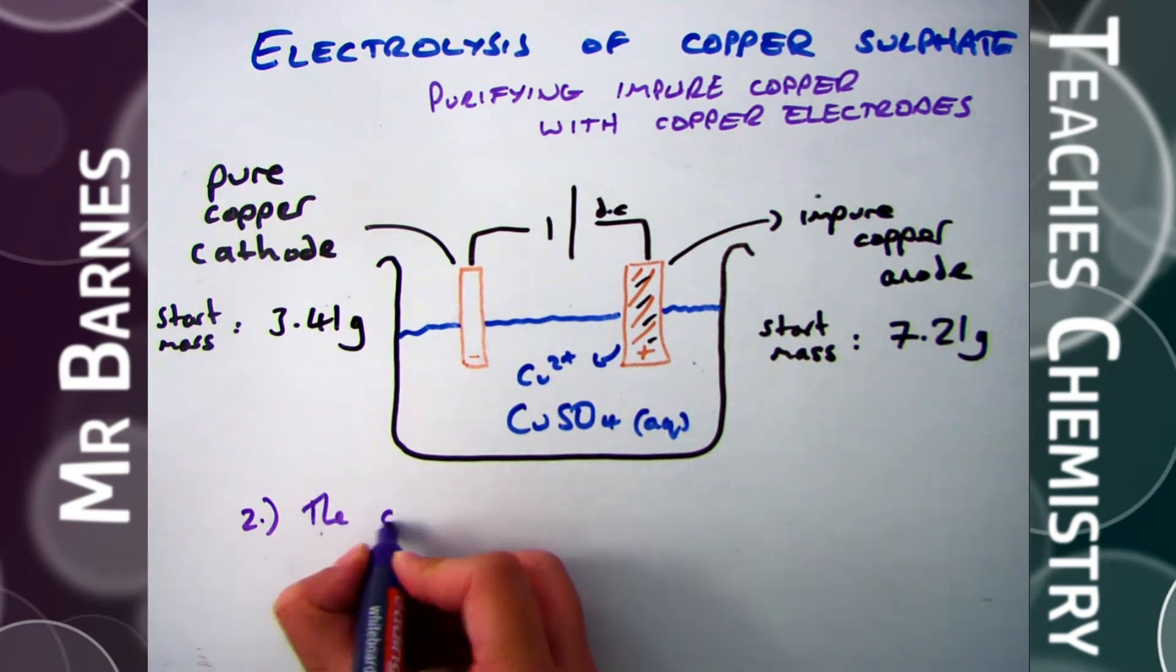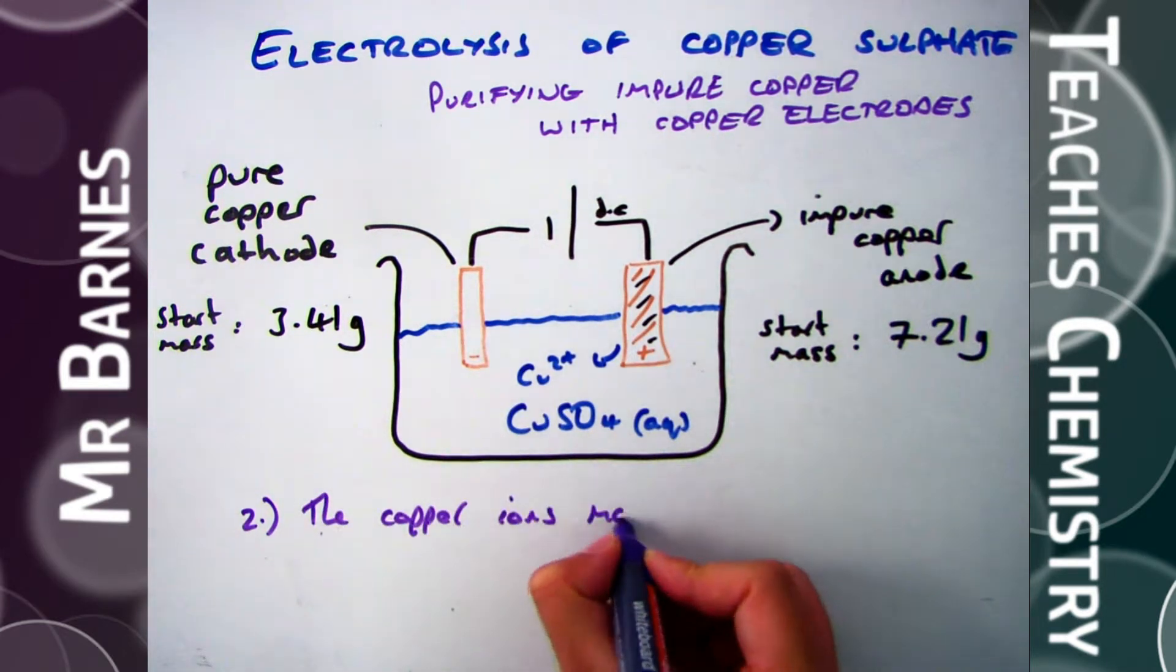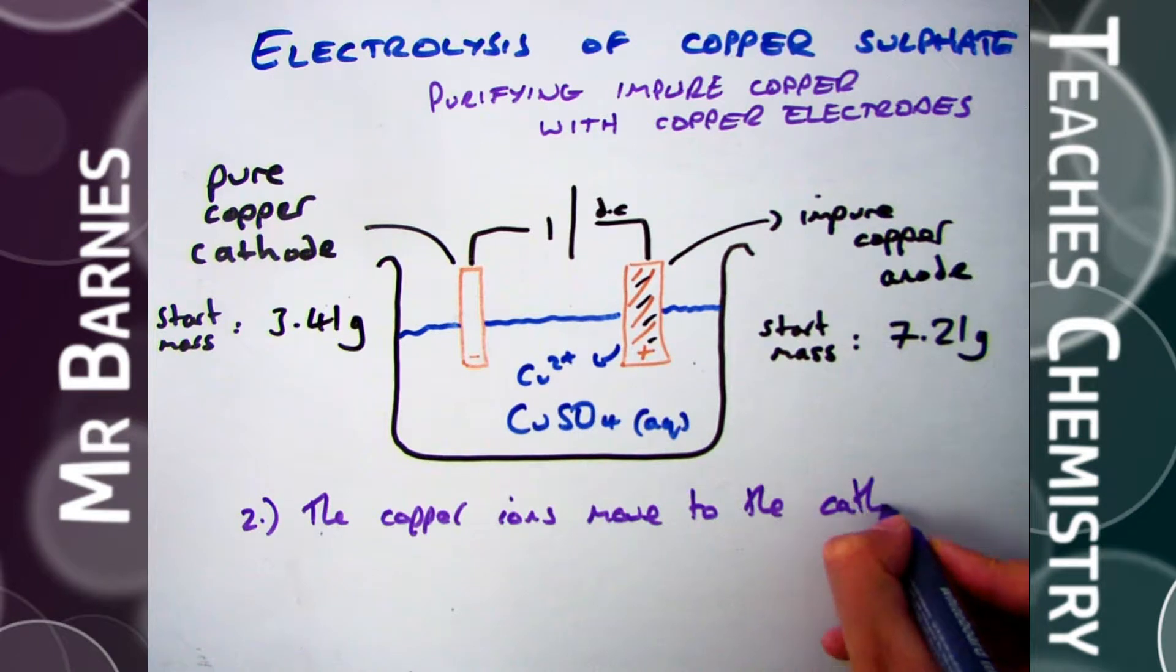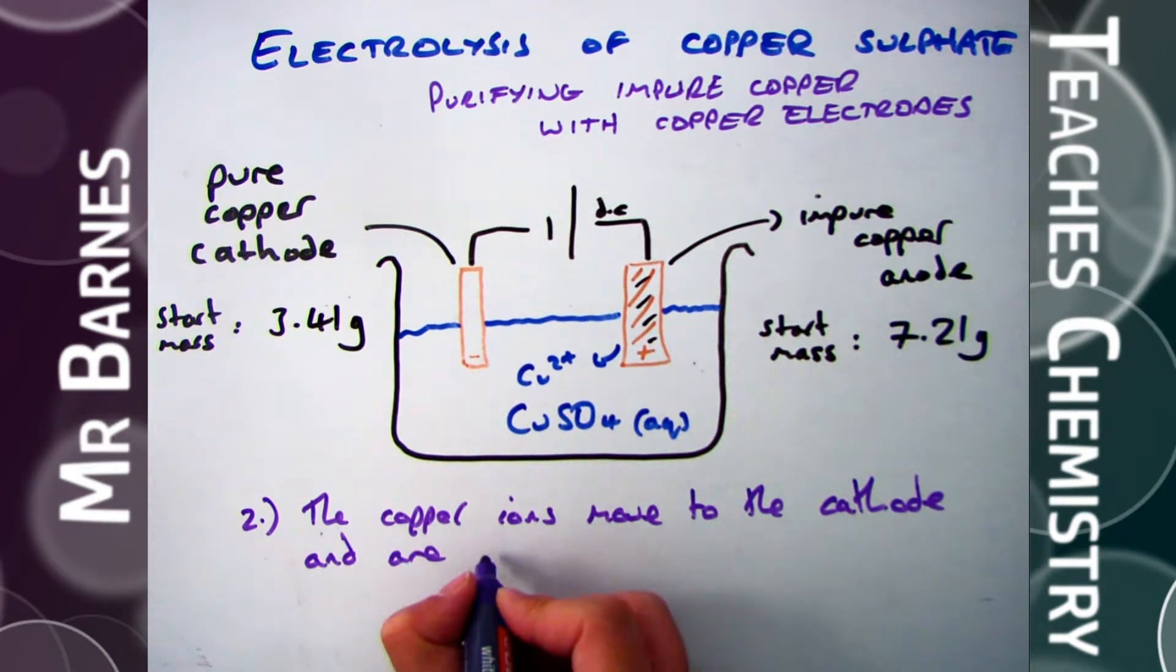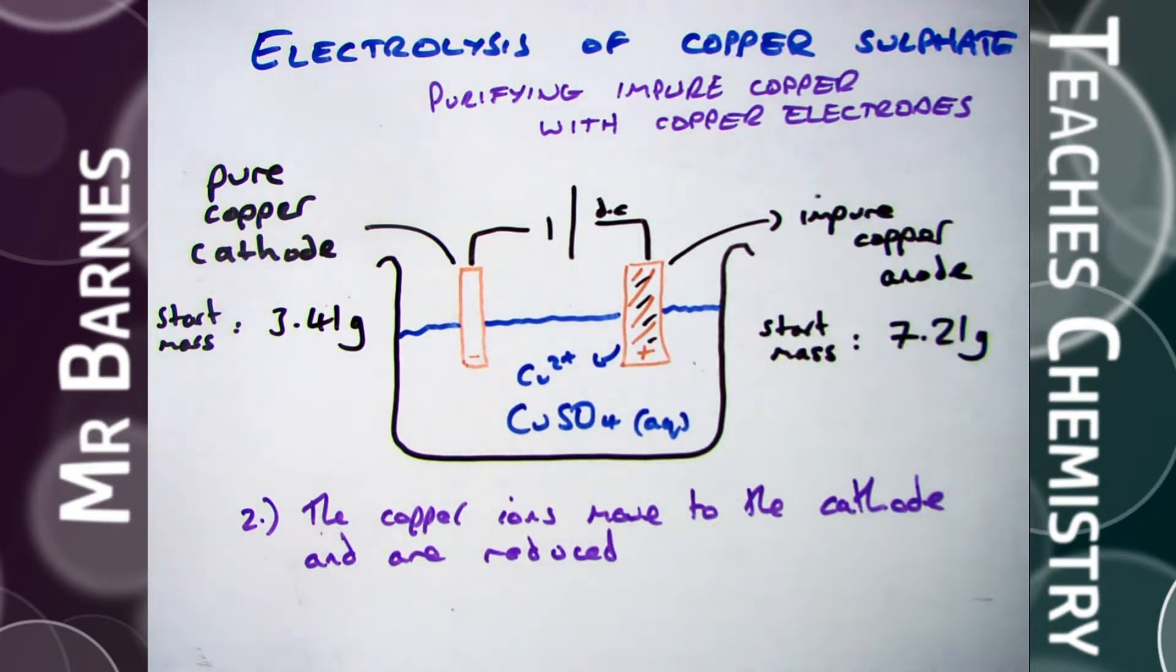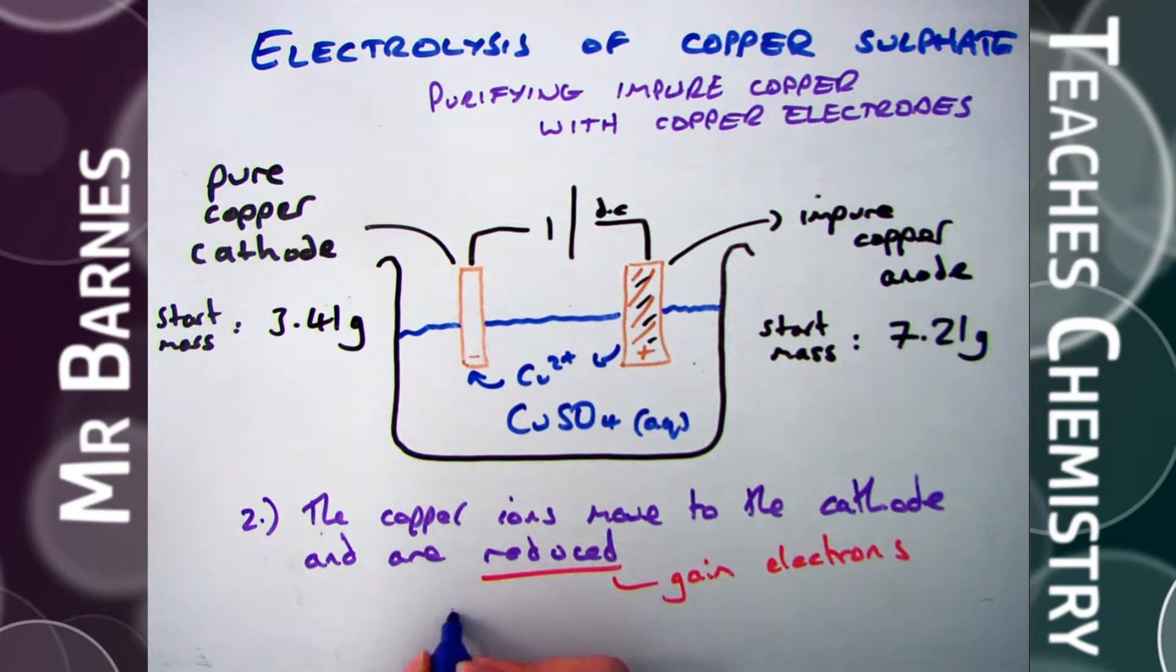Once that happens these copper ions will move to the cathode. Remember the cations are positive, the cathode is negative, opposites attract, so the Cu2+ will move over to the cathode, will be reduced, it will gain electrons and turn back into the actual copper atoms themselves. The half equation for this is Cu2+ plus 2e- goes to Cu, which is my metal.